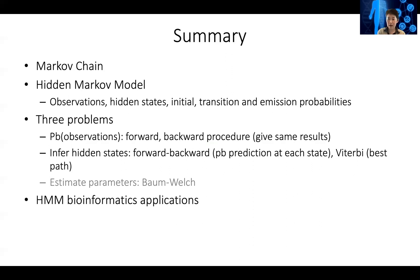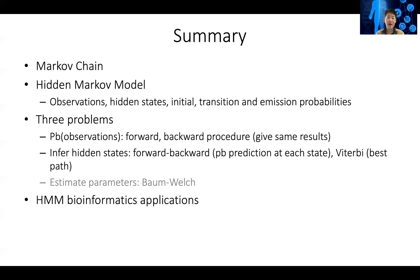The third problem is harder because you only have the observations but the parameters of the hidden Markov model are not given ahead of time. We talk about a similar approach to expectation maximization, which is the Baum-Welch approach. You randomly start somewhere — maybe use some reasonable initialization of the parameters — then use the parameters to guess the hidden path, update your model parameters, and iterate this process until convergence. Hidden Markov model has really been used in bioinformatics a lot, and you'll see that in the next lecture as well and in homework four.